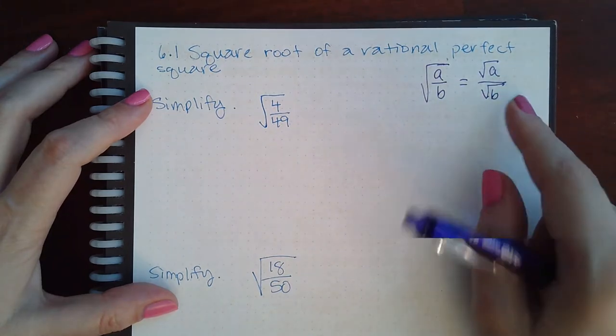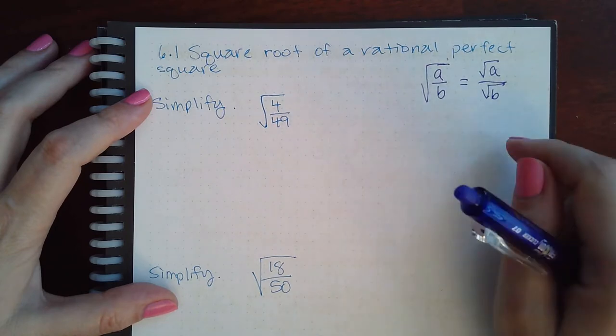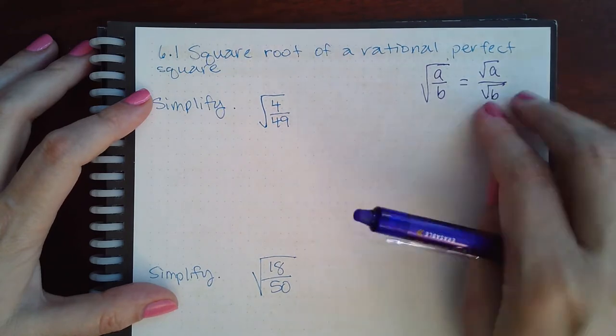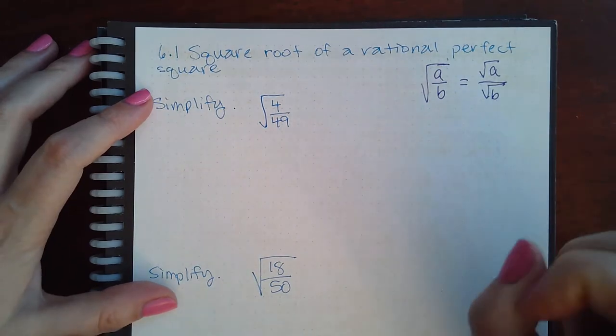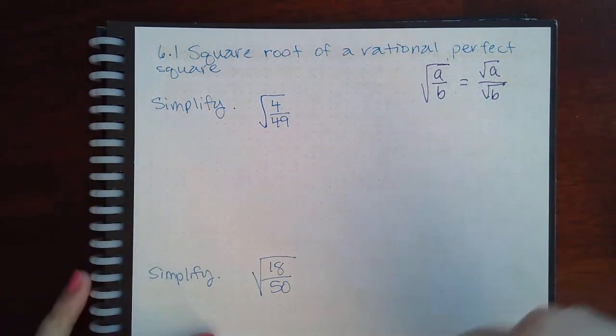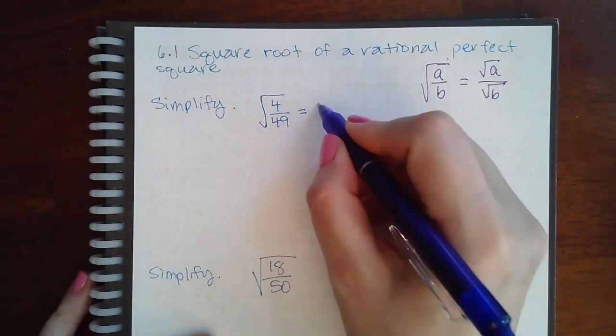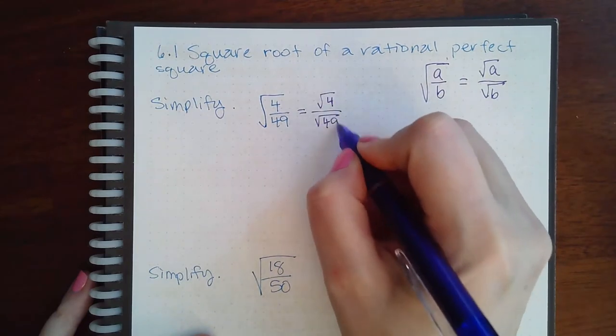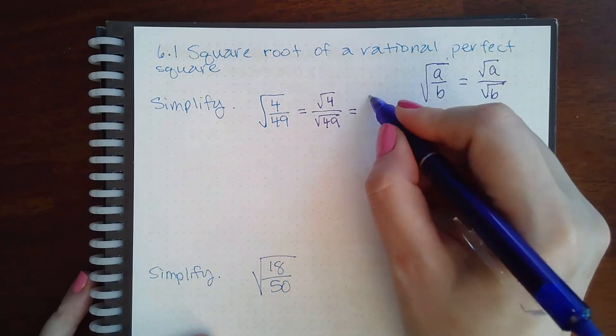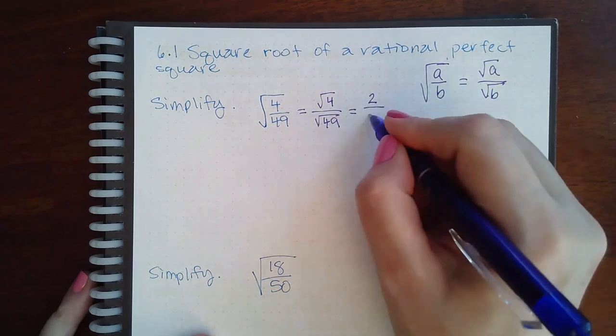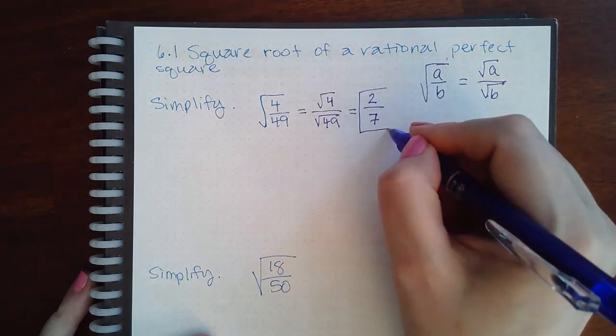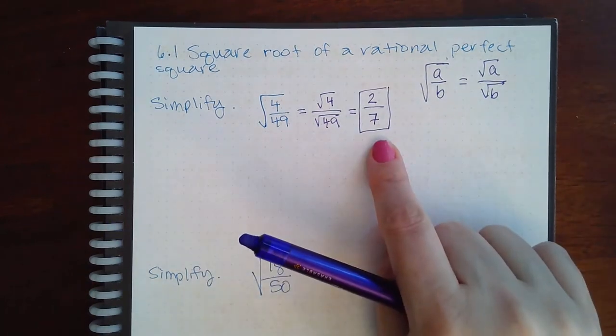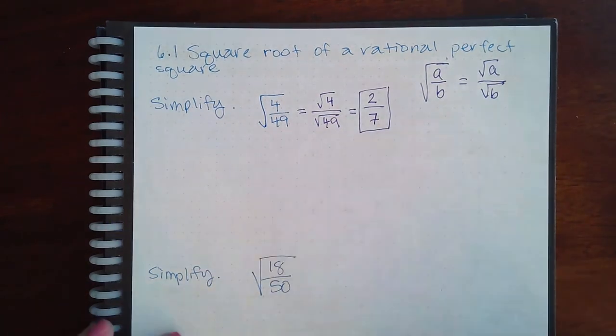Individually, as long as a and b are real numbers, this equivalency holds. So 4 and 49 are real numbers, so we can apply that rule and say that this is equivalent to this. Then the square root of 4 is 2, the square root of 49 is 7, and therefore this square root simplifies to this fraction.